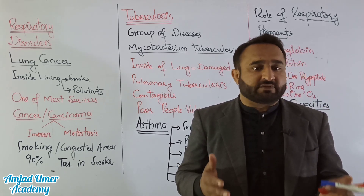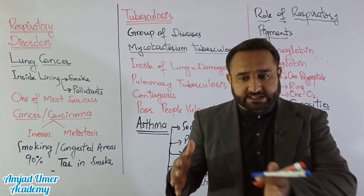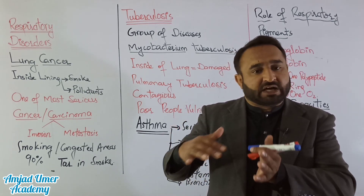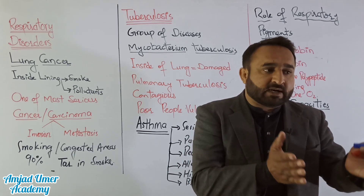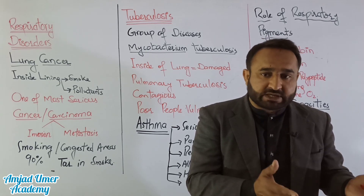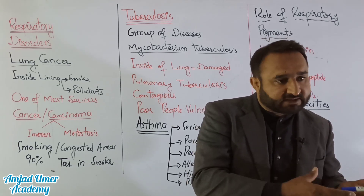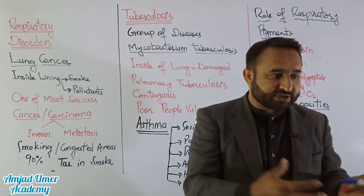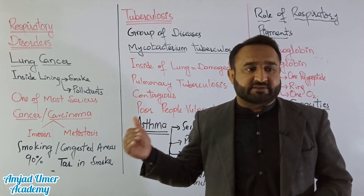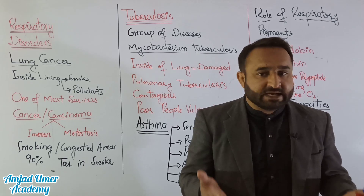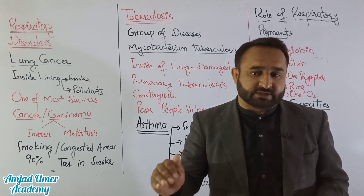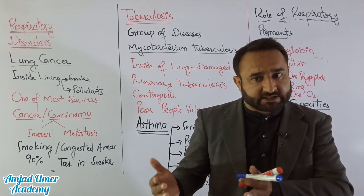Uncontrolled cell proliferation is called a tumor. Tumors are of two types: a benign tumor, which is localized at a specific place and does not invade or spread, and a malignant tumor — malignant meaning dangerous — whose cells invade neighboring cells and spread through blood circulation. This spreading process is called metastasis, and such a tumor is cancerous. Cancer is also called carcinoma, and anything that causes cancer is called a carcinogen.